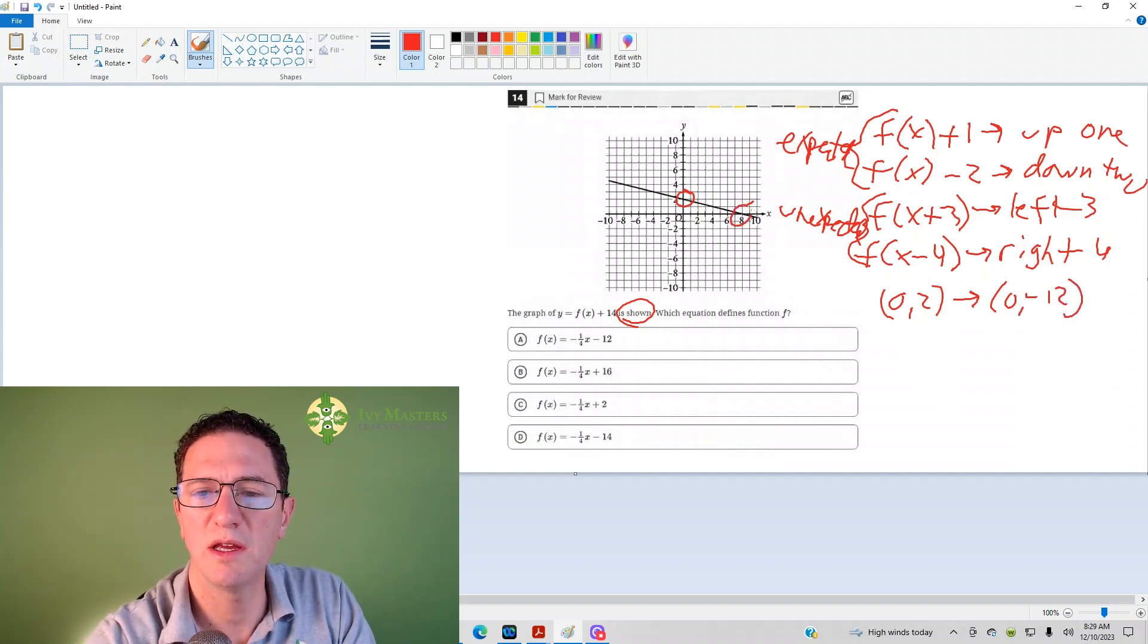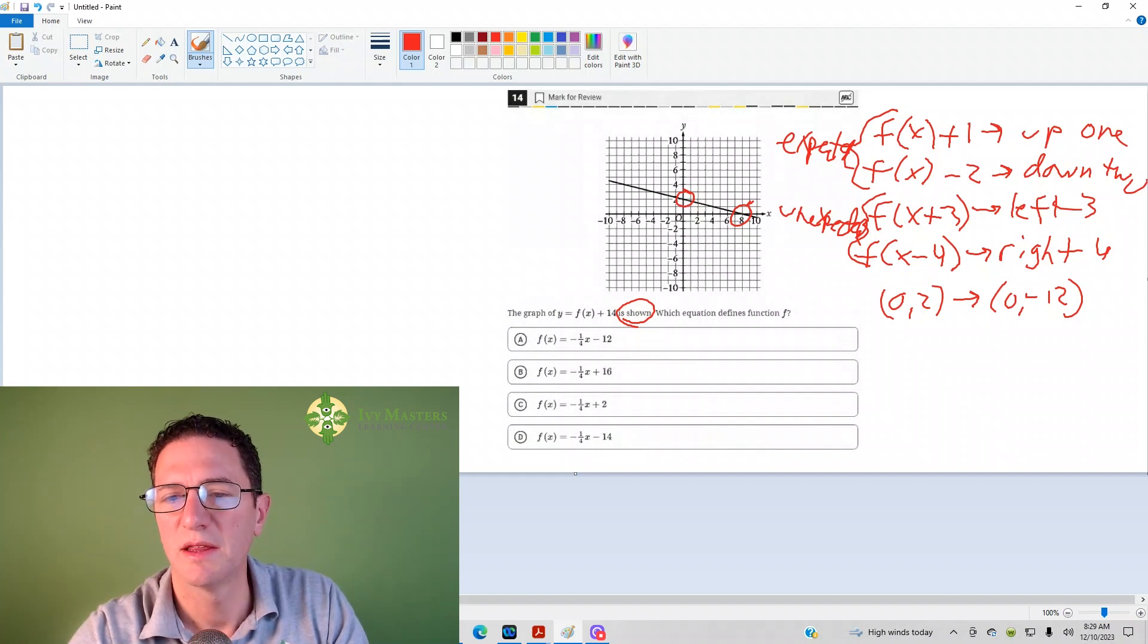So this point right here, that is (8, 0). If I move that down 14, again, the y is going to go down 14. It's still going to be at 8 for my x. Now I'm going to be at negative 14 for my y.